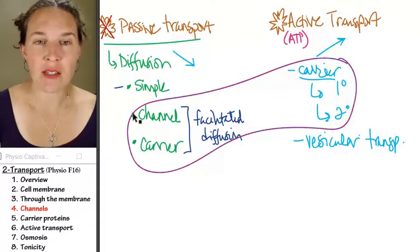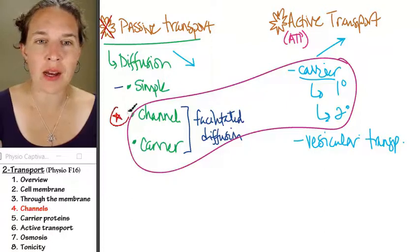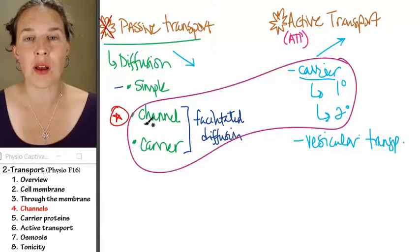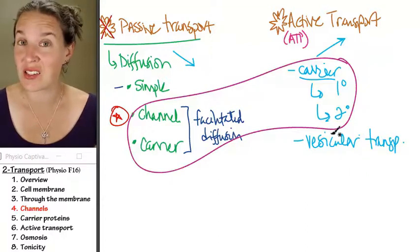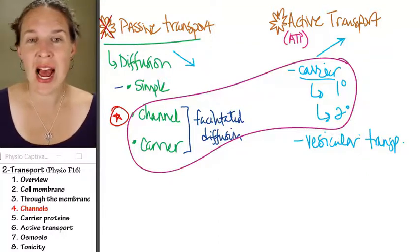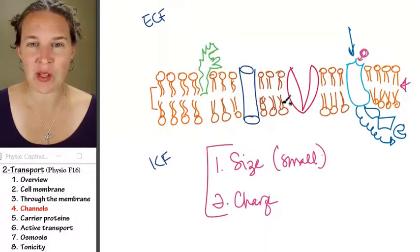Remind yourselves, we're talking about channels now. And remember that channels are an example of facilitated diffusion. So a channel is basically a tunnel in the cell membrane. I drew one here. This is an example of a channel.